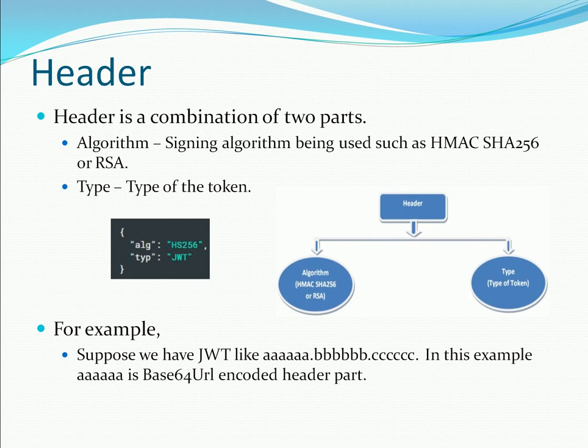Let's move on to the header topic. The first part is the header. The header has two parts: first, what kind of algorithm is going to be used, and second, what type of token is specified. Once the JSON structure is framed and the data is provided, the data is Base64 encoded — it becomes a normal string, for example 'AAAA'. That is the first part.